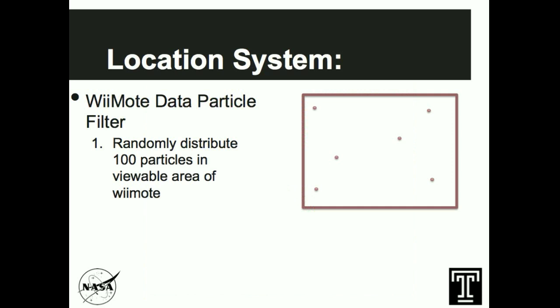The basic algorithm for the particle filter is this. We take that 1024 by 768 screen output from the Wiimote camera and we randomly distribute 100 particles in the viewable area of the remote. A particle is just essentially an imaginary point that I'm going to put somewhere in that 1024 by 768 grid. Each particle is going to have an X and Y position and also a score that we're going to assign to a particle.